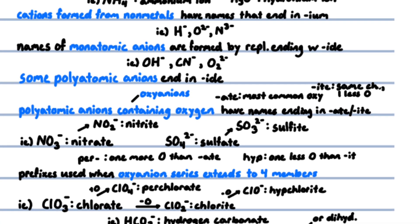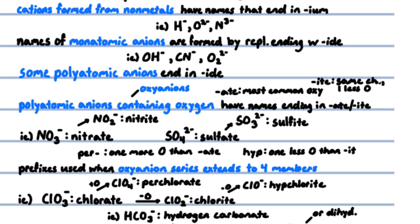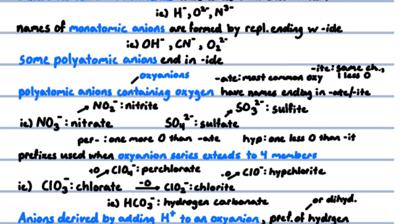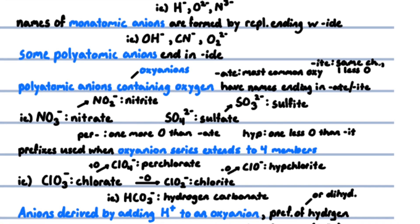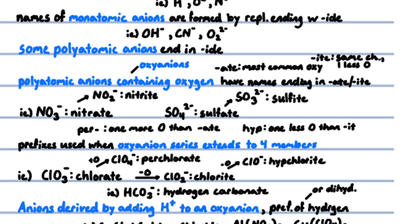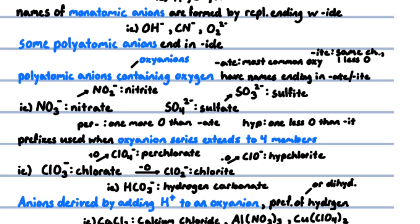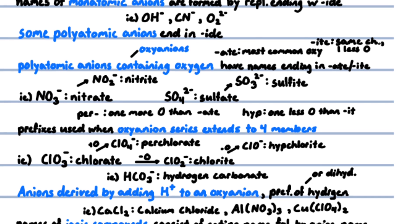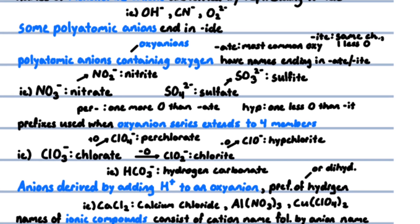Anions derived by adding hydrogen cation to an oxyanion are named by adding as a prefix the word hydrogen or dihydrogen as appropriate. CO3 with a negative two charge is carbonate ion. Adding a hydrogen cation to this gives HCO3 with a negative one charge—this is called hydrogen carbonate ion. It has a negative one charge because negative two from carbonate plus positive one from hydrogen equals negative one. Names of ionic compounds consist of the cation name followed by the anion name—for example, calcium chloride, aluminum nitrate, copper(II) perchlorate.